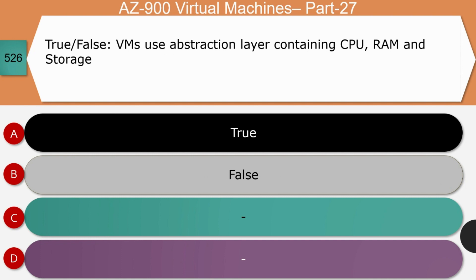Question 6: True or false — VMs use an abstraction layer containing CPU, RAM, and storage. The right answer is true. VMs use an abstraction layer containing CPU, RAM, and storage using hypervisor software.